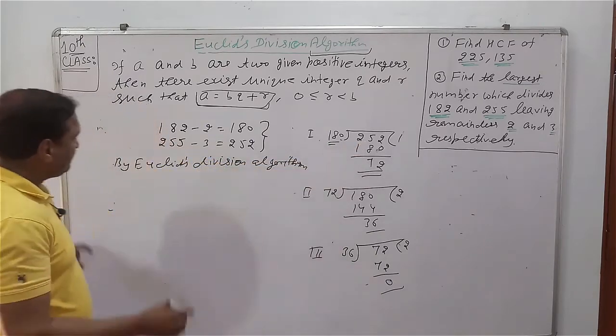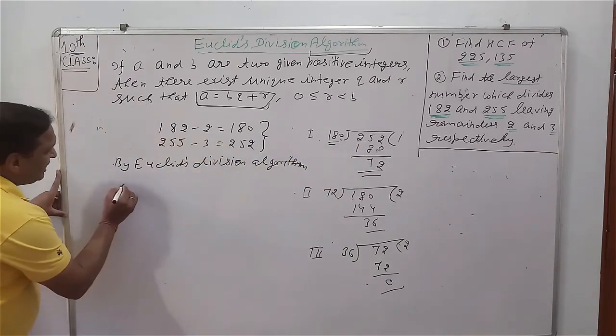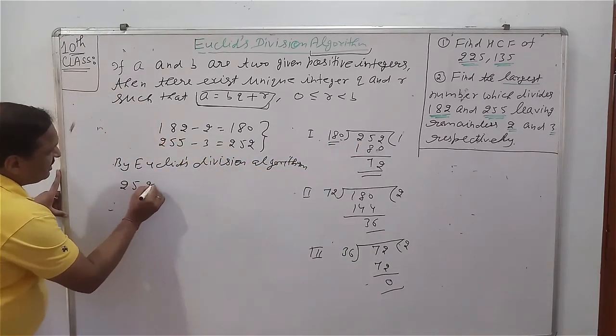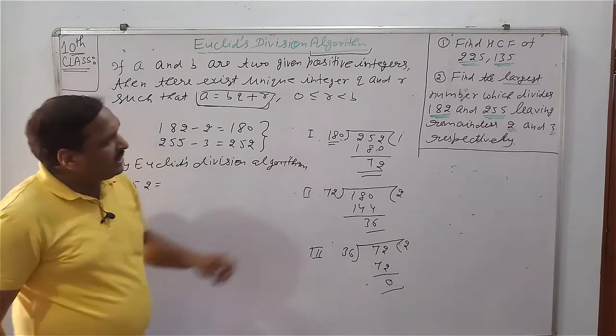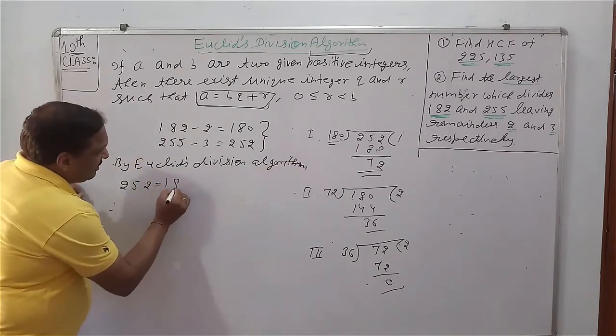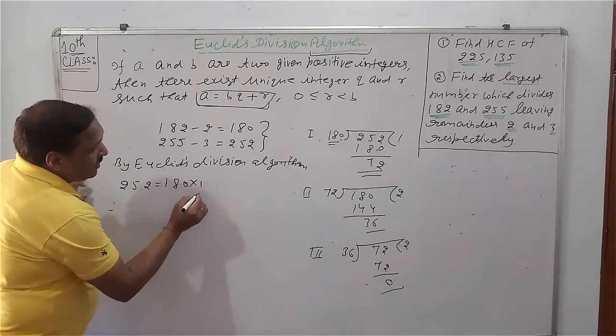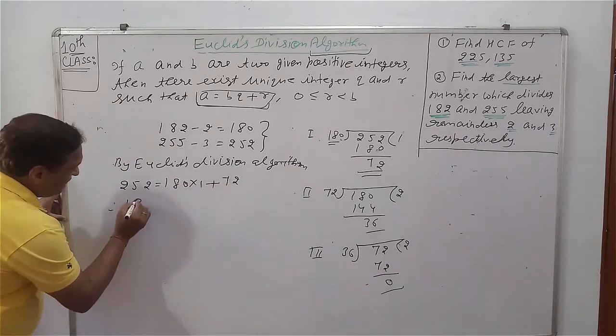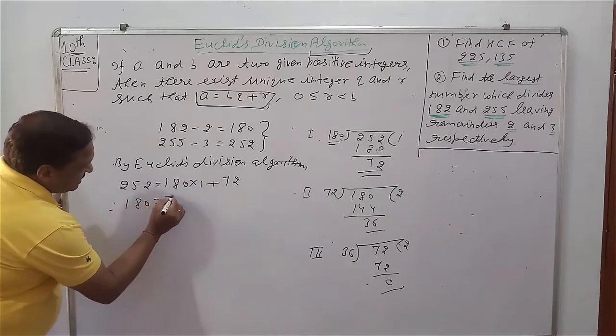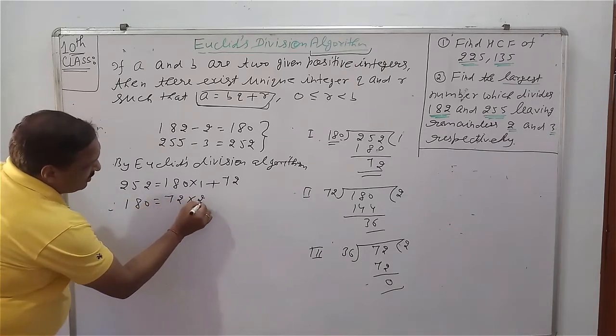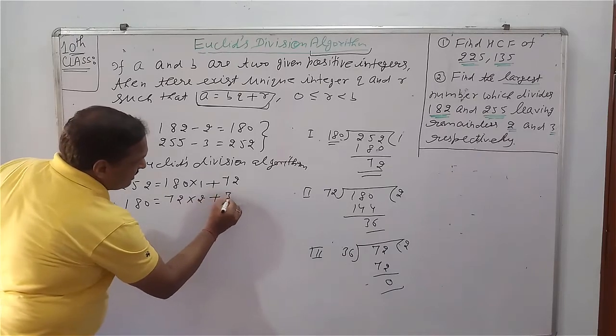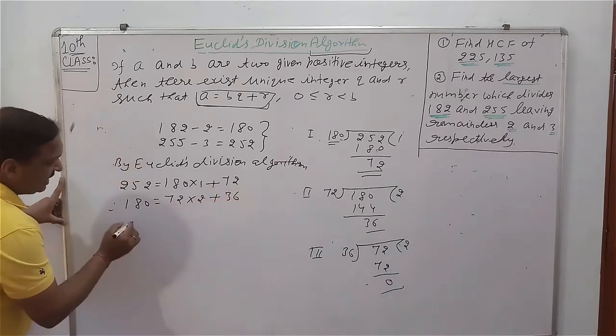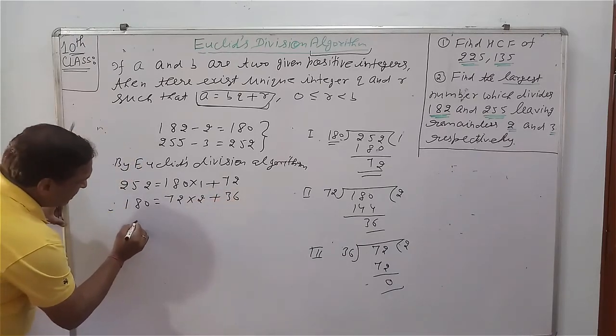In first step, 252 is A, so 252 is equal to 180 multiply 1 plus 72. In second step, 180 is equal to 72 multiply 2 plus 36.